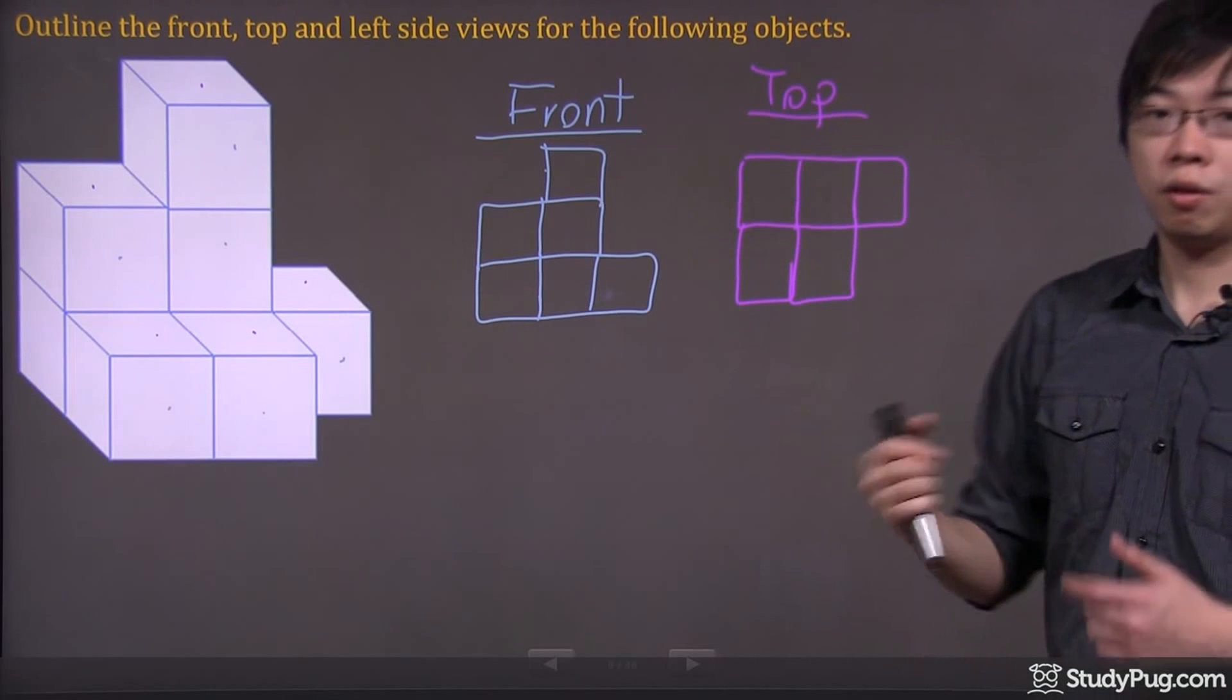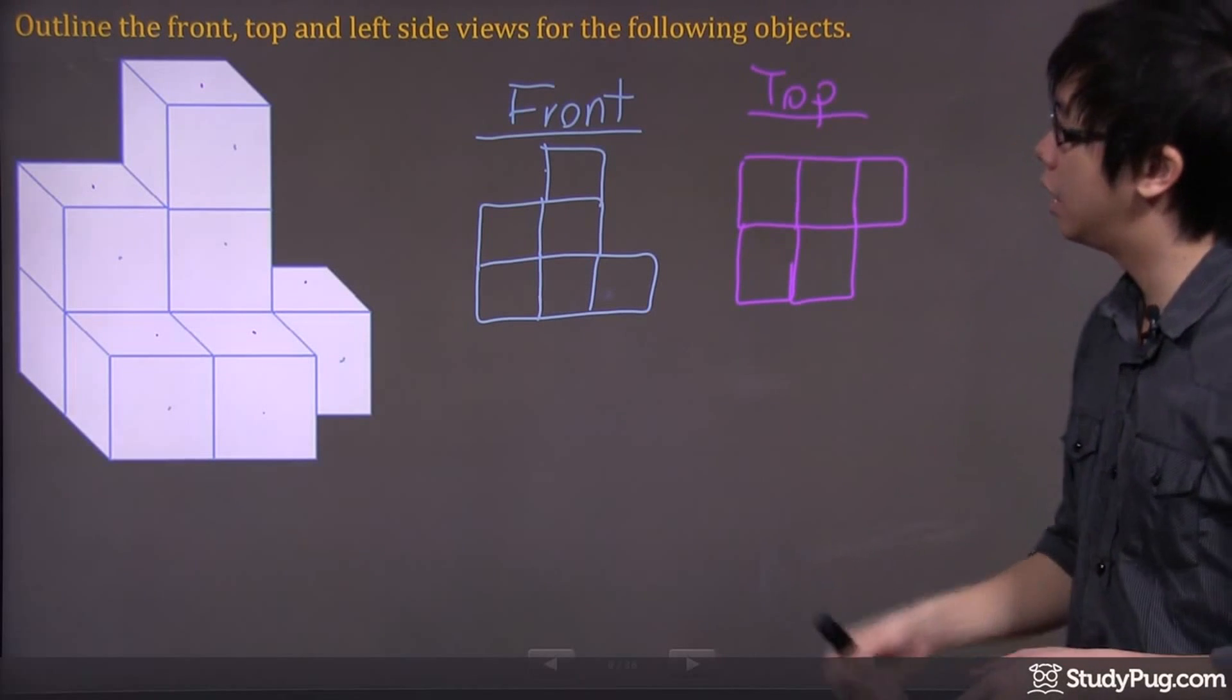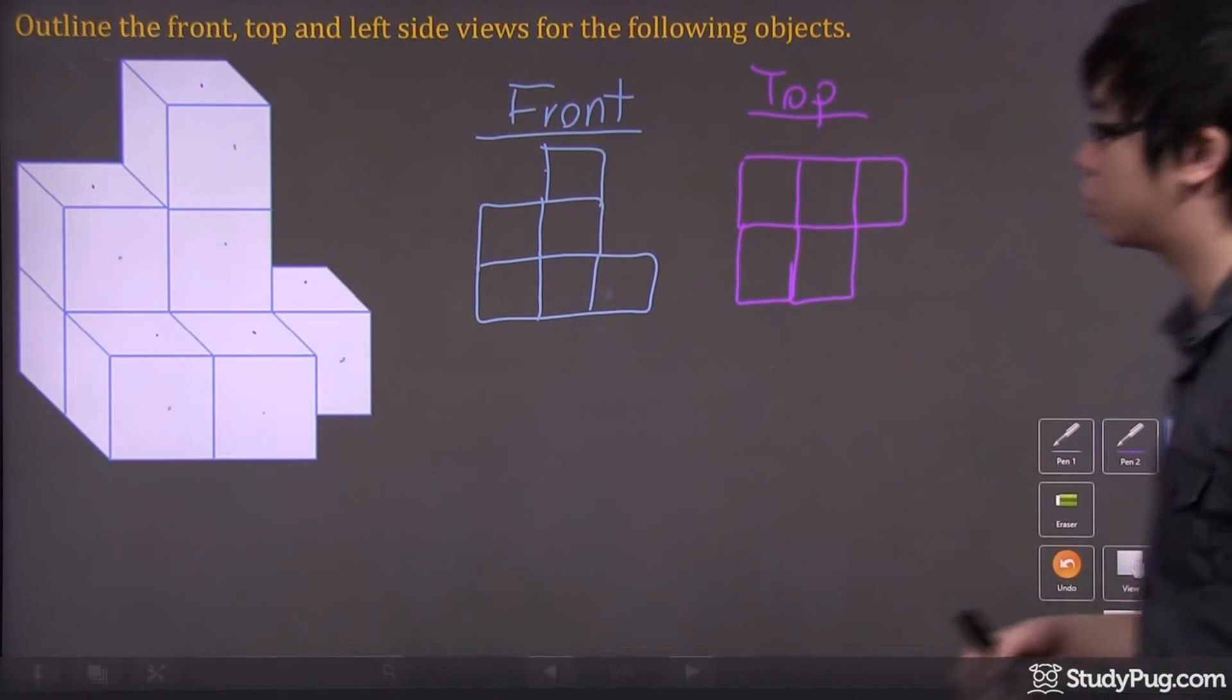So basically, this is what you have from the top view. Now let's do it from the side view here. Let's grab the last color, which is the red.